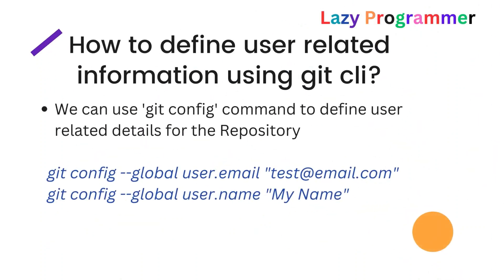Next, an interviewer can ask how you can define user-related information using Git CLI (command line interface). The user-related details include your email ID or name, which will be added to the repository. Whenever you push details to the remote repository, those details will be used. This information can be added to the local repository using the git config command.